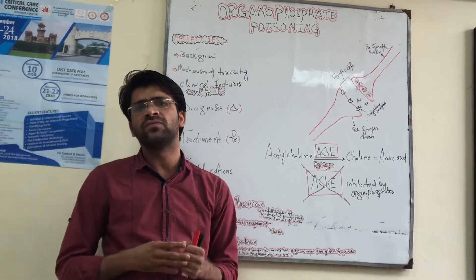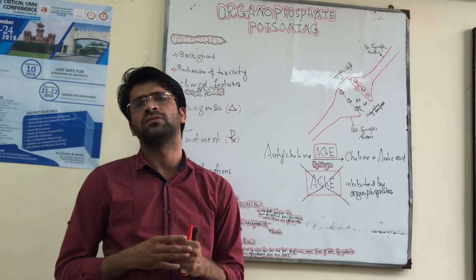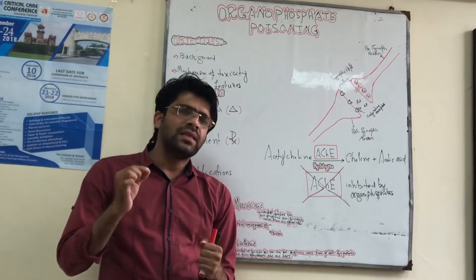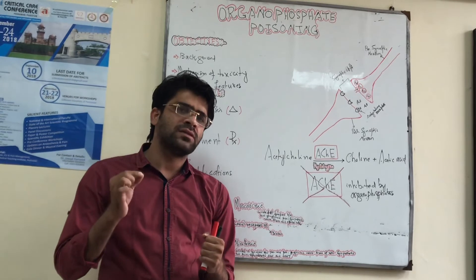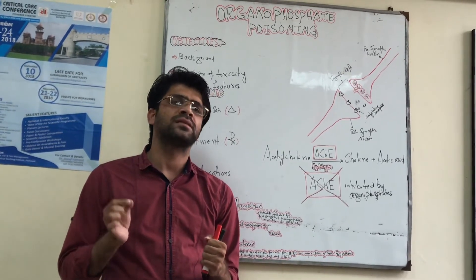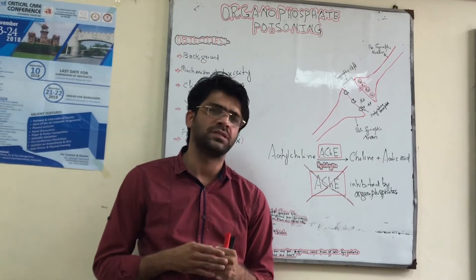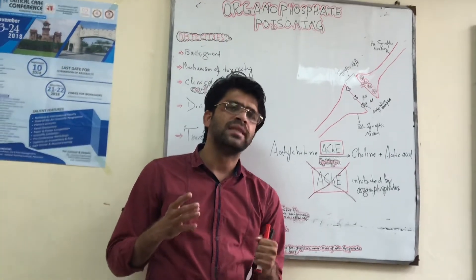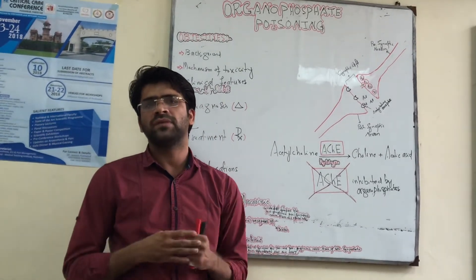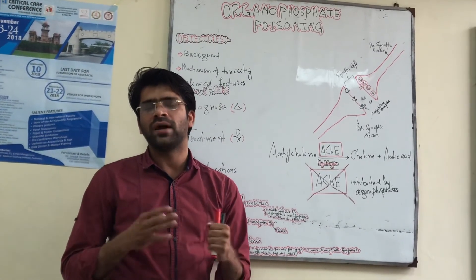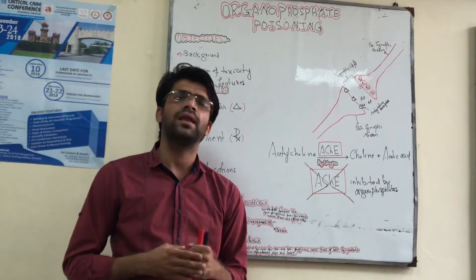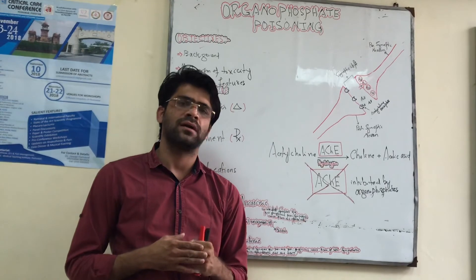Cholinergic syndrome is actually a mixture of both sympathetic and parasympathetic nervous system effects, but the patient usually presents with features of parasympathetic nervous system stimulation because they are long-lasting, while sympathetic stimulation is transient and not predominant. To understand the clinical features, we will discuss what happens when muscarinic and nicotinic receptors are stimulated.